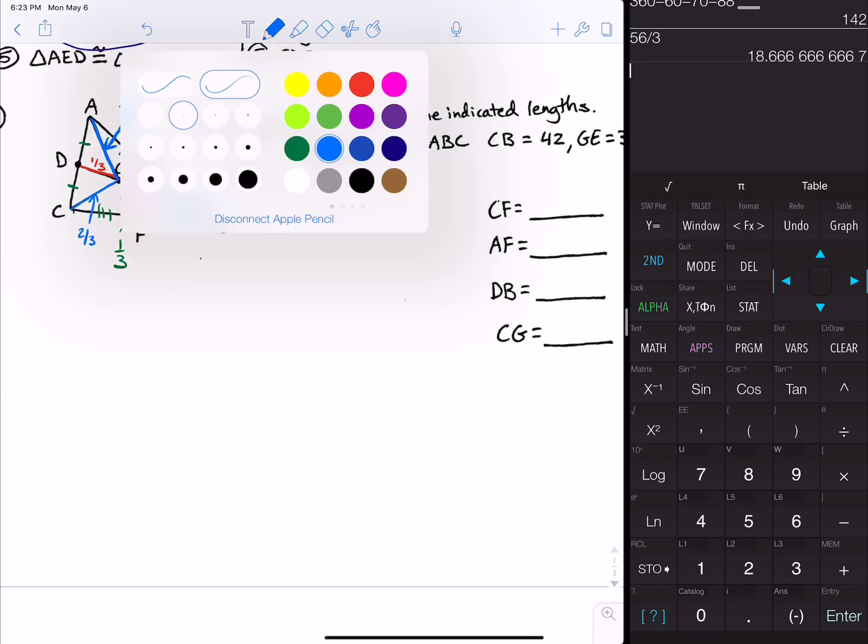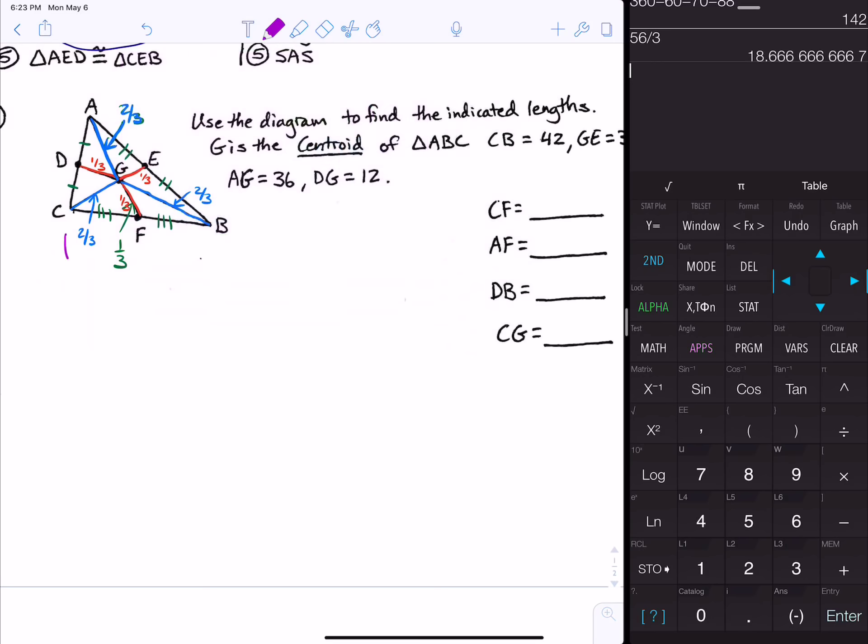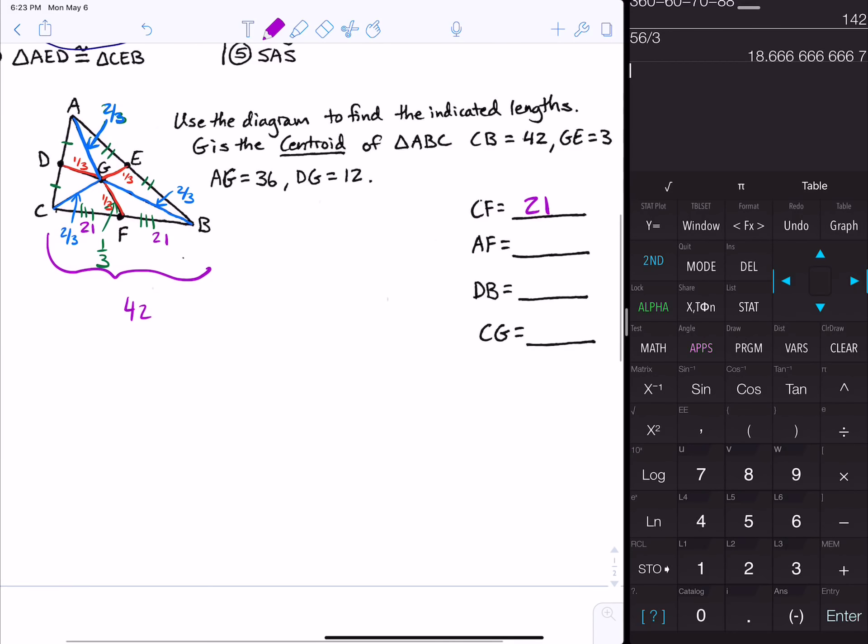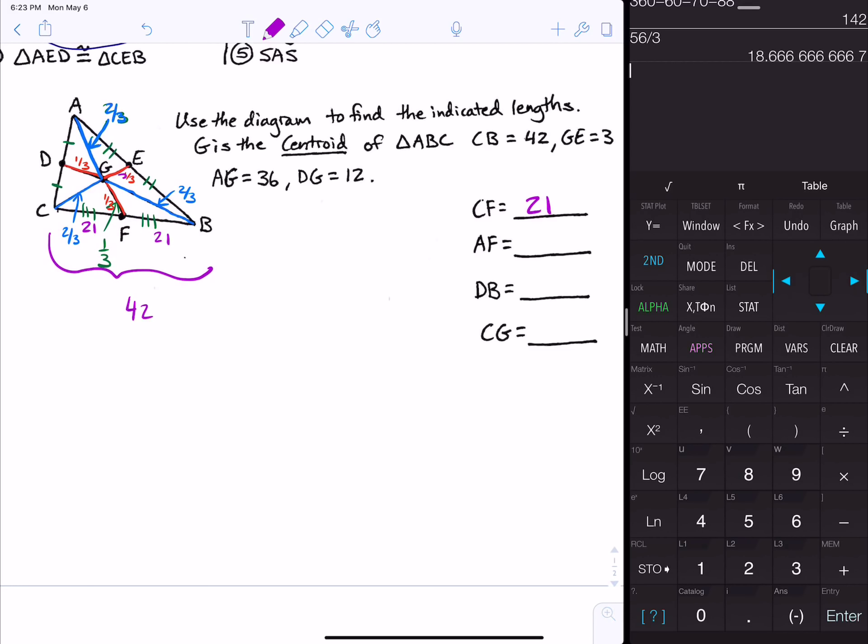This is 42, that tells us that CF is 21 and FB is 21, so we could go ahead and answer that first question. Then it asks for AF. They told us GE is 3, so that's the one-third. That means there's two more sections that are equal to 3 on the segment CG, so we could say that would add up to 6.